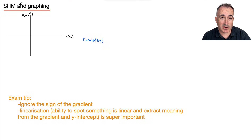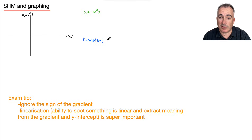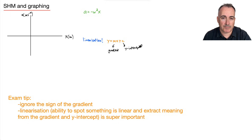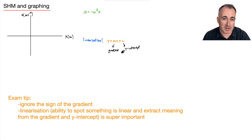Let's consider simple harmonic motion and the graph. We have the equation a equals minus omega squared x. I want to recognize this as what we call linearization. Remember the equation for a straight line: y equals mx plus c, where m is the gradient or slope, and c is the y-intercept. This ability to spot something as linear and extract meaning from the gradient and y-intercept is a super important skill.